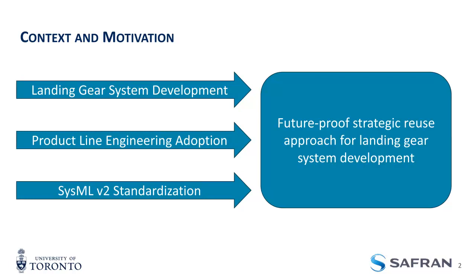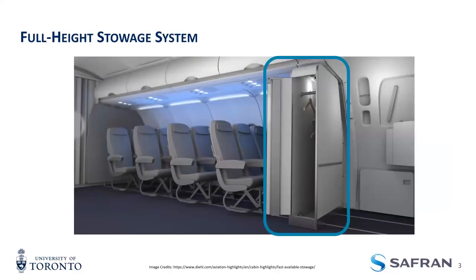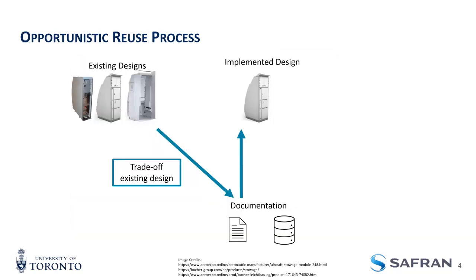The point of this work is not to look at the system model itself, so we looked at a simplified example from literature — a full height stowage by Wilkins and Forgalini — which is essentially like a tall cabinet that we put in aircraft. Pretend you're a systems engineer and you need to develop this product. You have a new RFP, and your first question is probably: have we done this before? If so, you go look through the documentation, find the one that best meets your needs, and use some of that information to develop your new design. This is called opportunistic reuse.